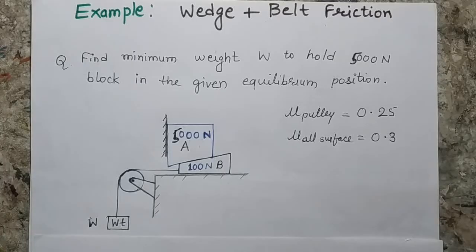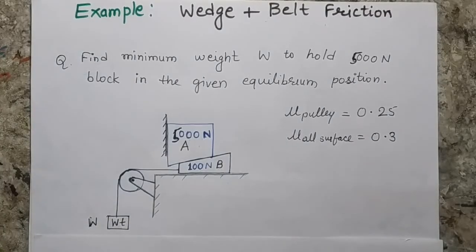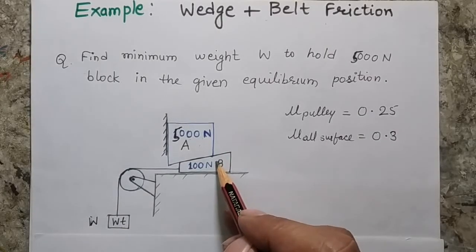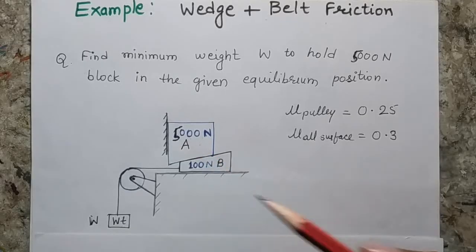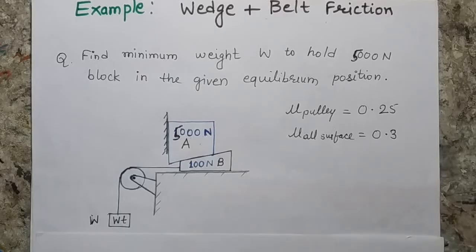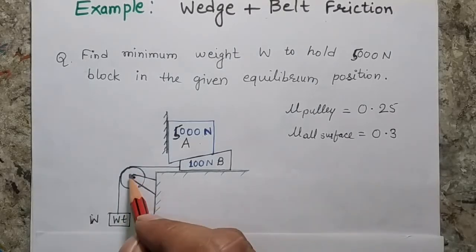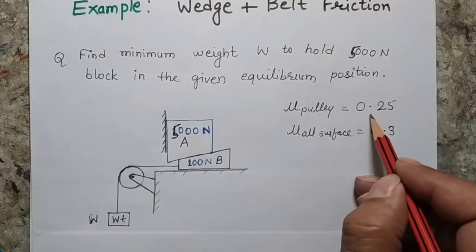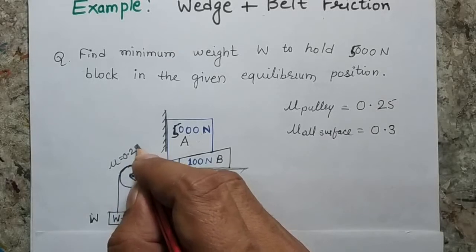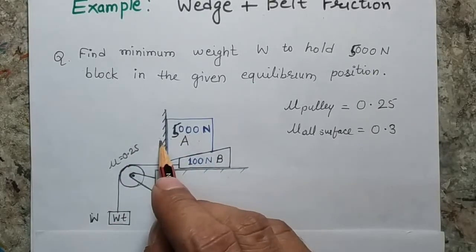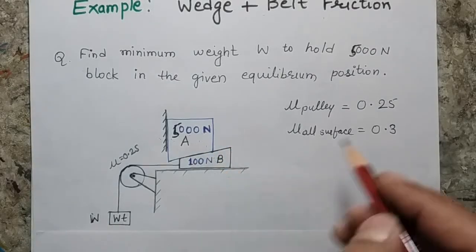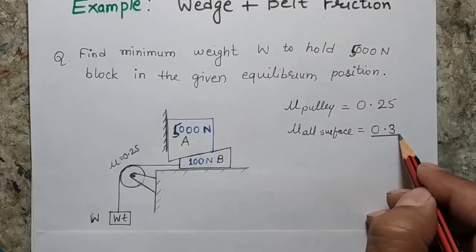As explained in my previous video on wedge friction, the weight of the wedge is normally very less compared to the other block — in most cases we ignore it — but since it is given in the question, we will consider it in our solution. There is also a pulley with a coefficient of friction of 0.25, and at all other surfaces — between the wall and block A, block A and block B, and the wedge and the ground — the coefficient of friction is 0.3.